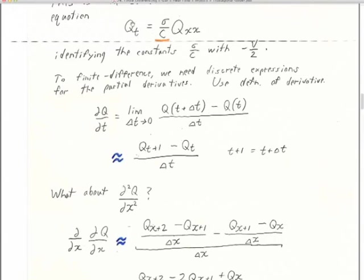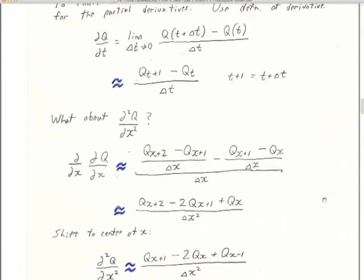Now the notation gets a bit wacky. At the top of the page, a subscript means a derivative; partway down the page, a subscript means an index. Q at a certain time index versus Q at one time index back. Watch out for that problem with the notation. Our finite approximation — our finite difference — is Q at (t plus one) minus Q at t, divided by delta t. The t plus one index means t plus one times delta t.